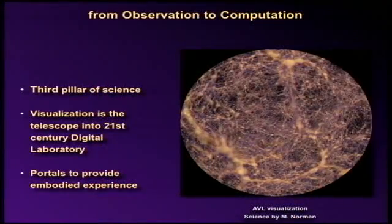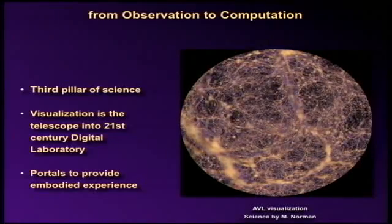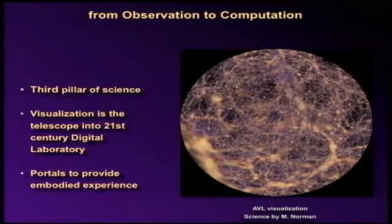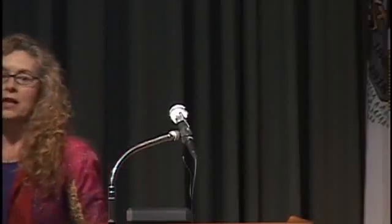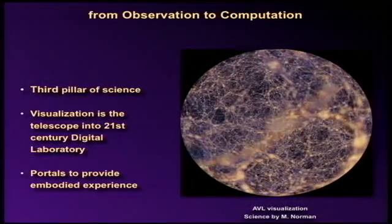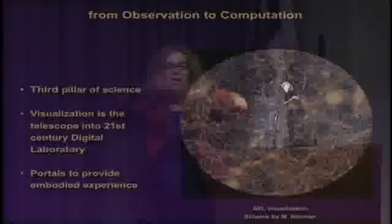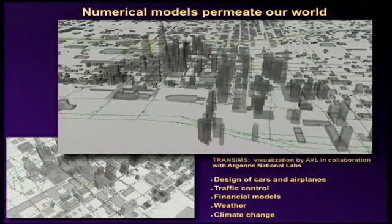But what is computational science and what does it matter to you? From observation to computation, in this last century we have made a move away from just experiments and observation to the third pillar of science. That's what computational science is all about — constructing and viewing the universe, understanding the universe about us in a digital laboratory of a supercomputer. Visualization is the only way you can probe into the billions of numbers that these simulations provide.